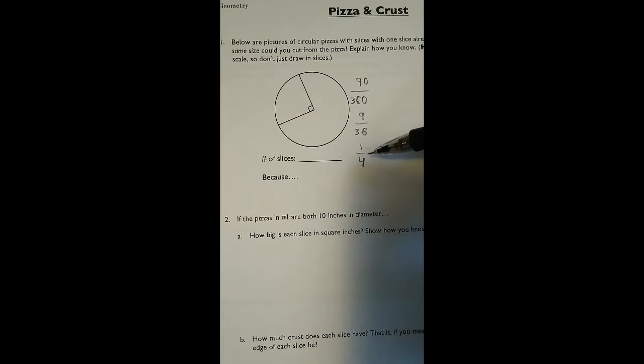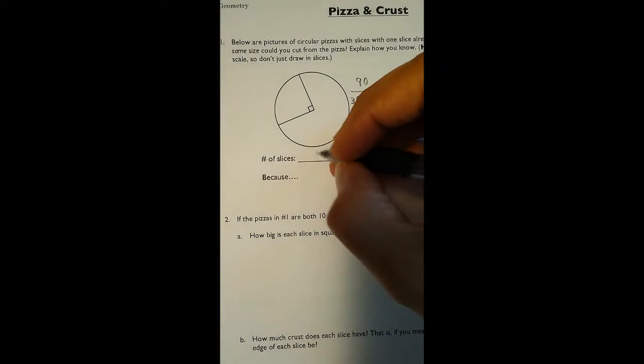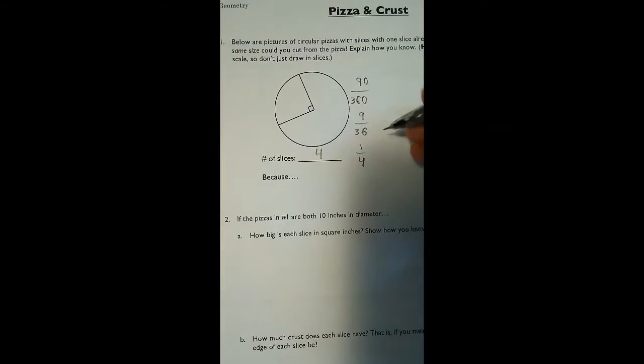So how many pizza slices of this size can we make in the circle? Well, if one of the slices is one fourth, that means the total number of slices would be four. If one slice is one fourth, then the entire pizza is four slices.